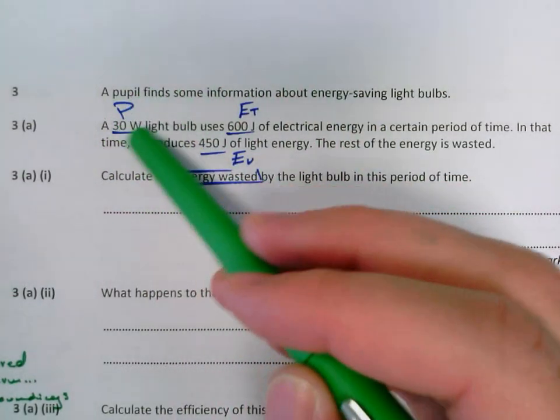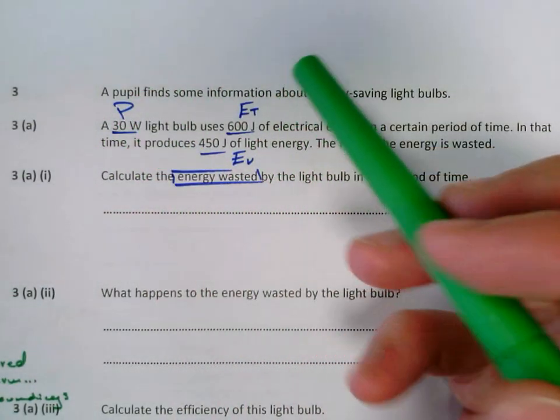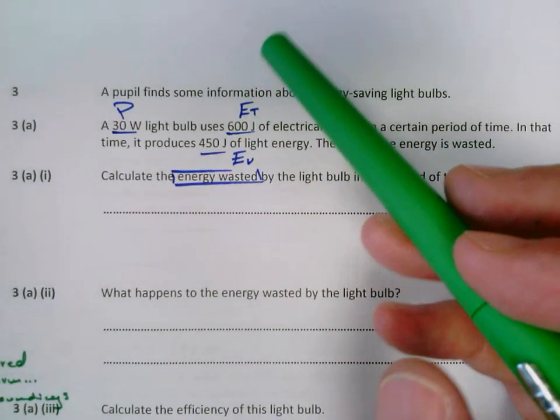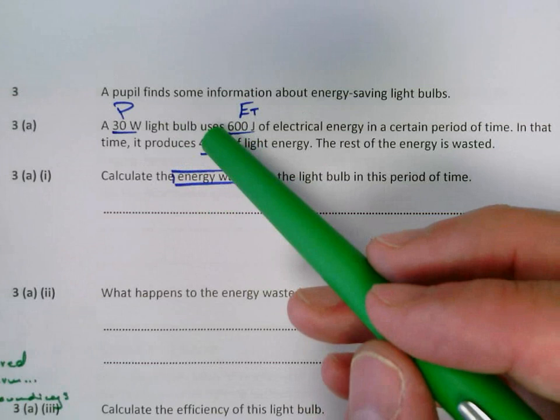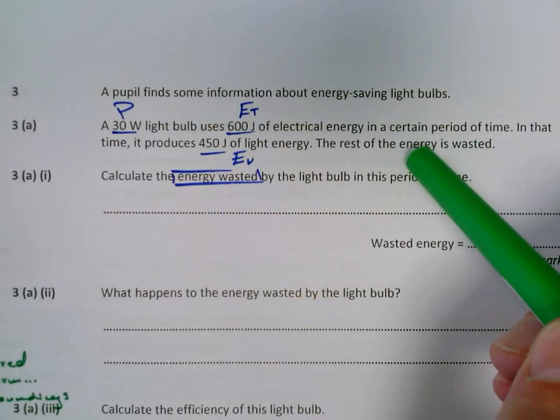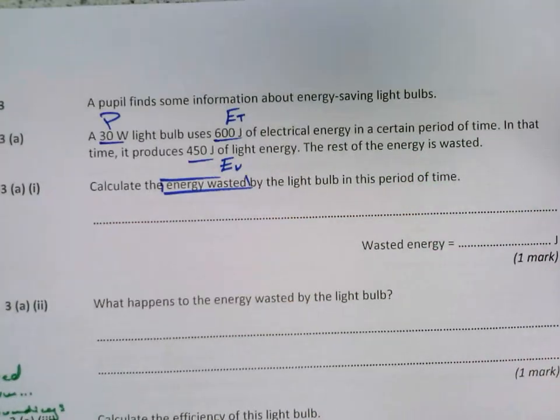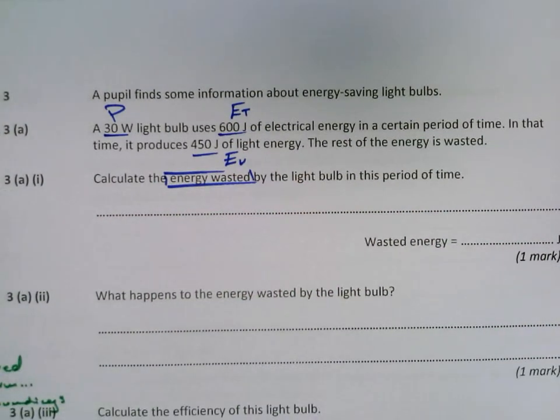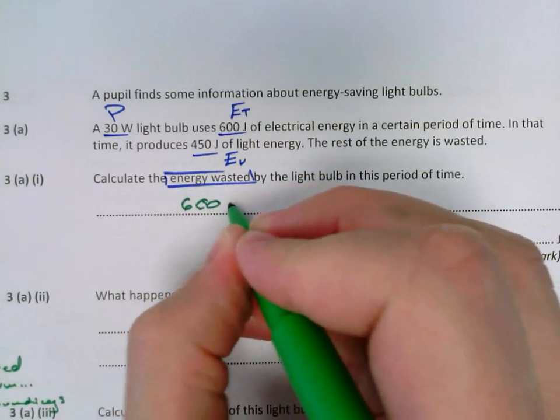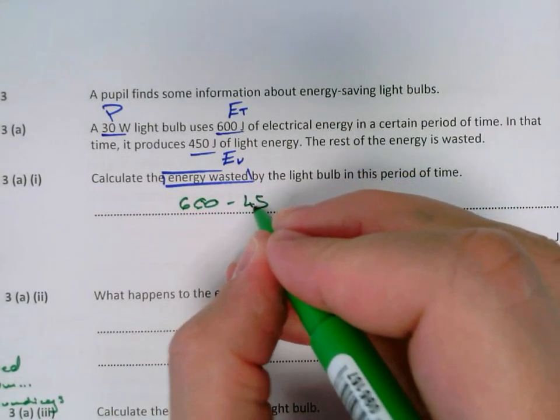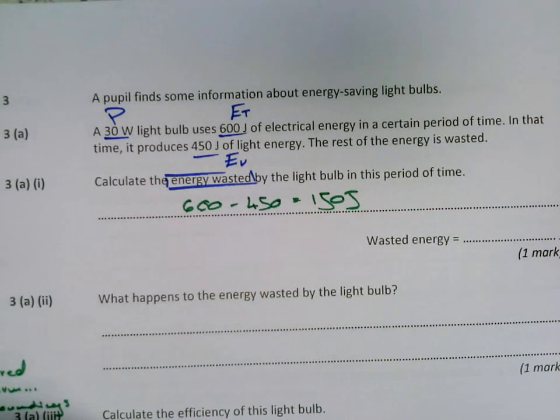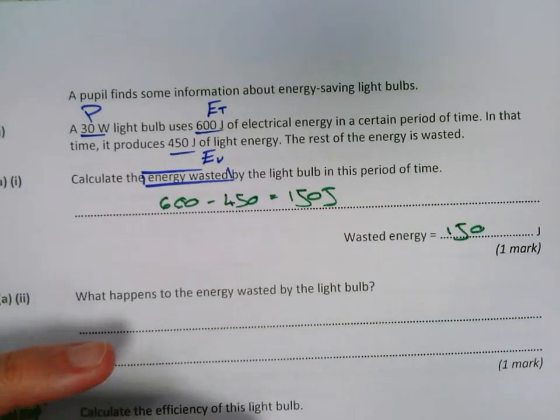We've got a power, that's shown by the watts. We've got a total energy - I've done that, capital E and a T for total energy - and we've got some useful energy, which I've labelled capital E with a U. The rest is wasted. So it wants you to calculate the energy wasted. It's quite a simple calculation: 600 minus 450 to give 150 joules. That is the answer, 150 joules.